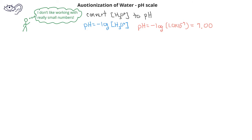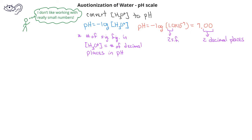We should stop here for a quick word about significant figures for logarithmic functions. The number of significant figures in the concentration will be equal to the number of decimal places in the pH value. For a neutral solution we have a pH of 7. For acidic solutions we have pH values less than 7, and for basic solutions we have pH values greater than 7.